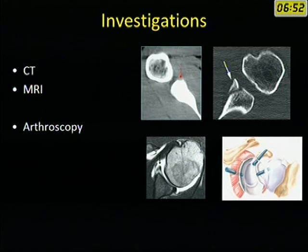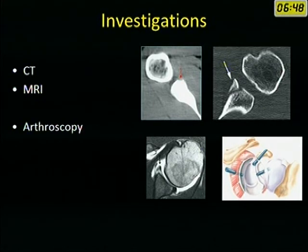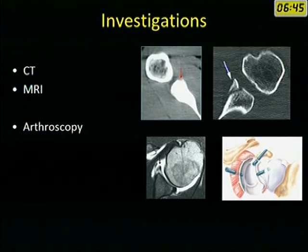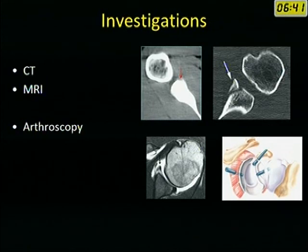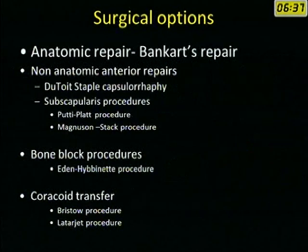CT can show bony lesions very clearly. MRI, especially contrast-enhanced MRI (arthrogram), can show both bony and labral tears. Arthroscopy as a diagnostic tool is rarely used.